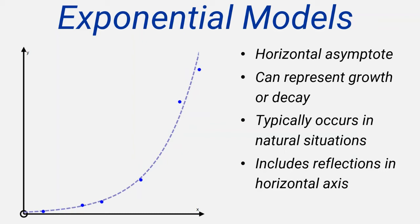Exponential models come in two basic forms, exponential growth and exponential decay. Both are characterised by rates of growth that are dependent on the value of the function. That is, the greater the value of the function, the faster it is increasing or decreasing.